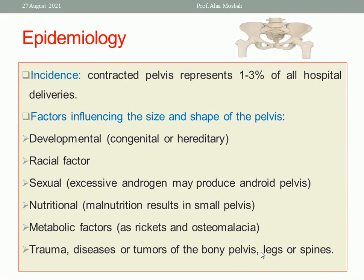The incidence of contracted pelvis is about 1% to 3% in all hospital delivery cases. Factors influencing the size and shape of the pelvis include developmental factors like congenital or hereditary, racial factors, sexual factors such as excessive androgen which may cause android pelvis, nutritional factors like malnutrition resulting in a small pelvis, metabolic factors like rickets and osteomalacia, or trauma, diseases or tumors of the bony pelvis, legs, or spine. Remember that the bony pelvis, legs, and spine all affect the size and shape of the pelvis.